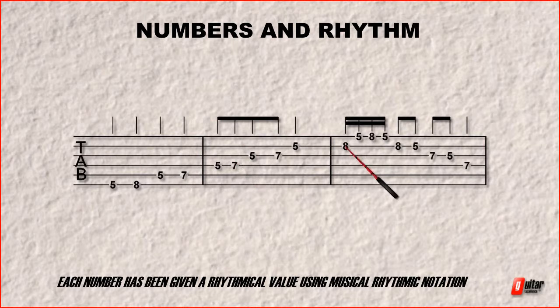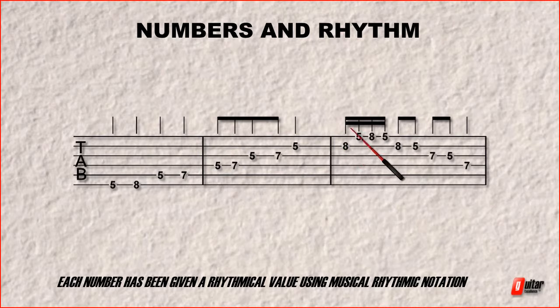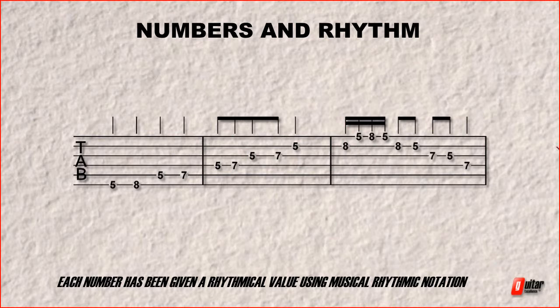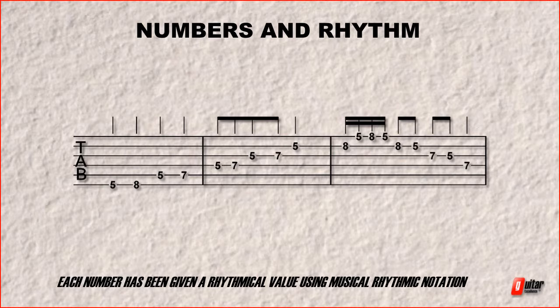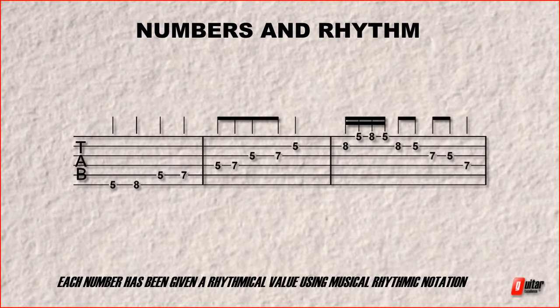Then here we can see the eighth fret of the B string is only lasting for one sixteenth note. So these rhythmical values do give a lot more value to your tab. And just make things a lot easier for us to understand considering we are reading tab. Let's have a look at another example.